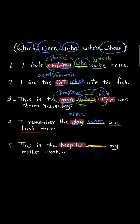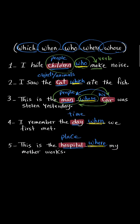Number five: this is the hospital, which is a place. And you know, places take 'where.' So we write 'where' here. Make sure that what comes next happens at that place — like my mother works at this hospital. So we use 'where' here: This is the hospital where my mother works.